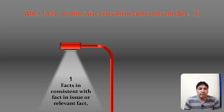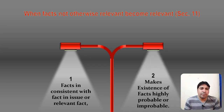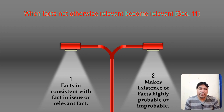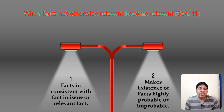Facts which are not consistent with the fact in issue, and which are not consistent with relevant facts — such facts can become relevant under Section 11. There are situations where facts seem probable or improbable. After discussing examples under Section 11, we will understand when facts not otherwise relevant become relevant on the basis of inconsistency.